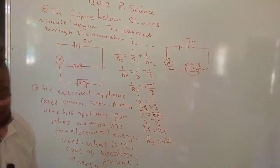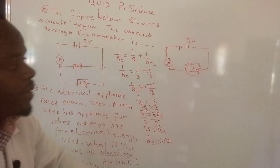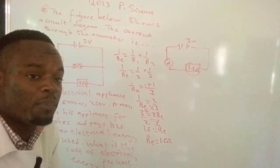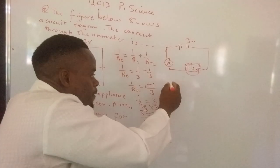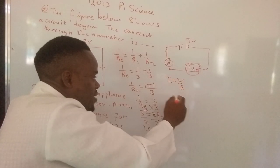Now, what's the current that is charging through the circuit? For you to determine current, you apply Ohm's law. Current is equal to voltage over resistance.